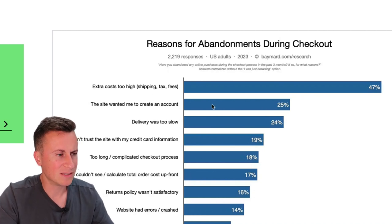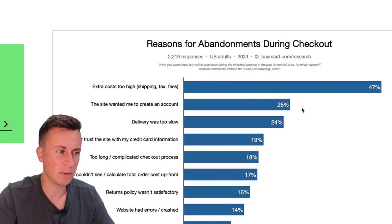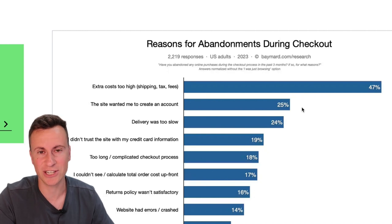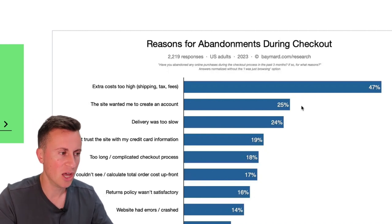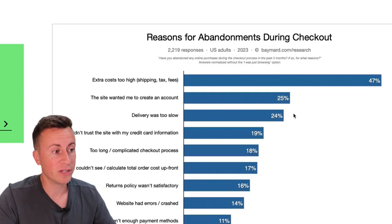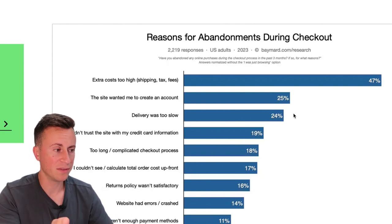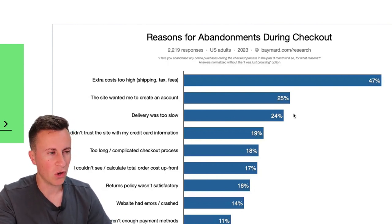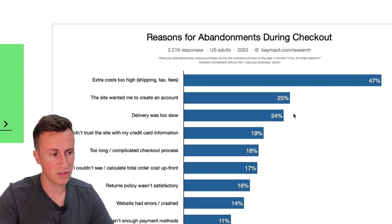Regarding being forced to create an account — this isn't an issue as long as you haven't been playing around and ticking checkboxes in your Shopify settings; by default it won't require that. Next: delivery was too slow. I want to bundle this in with delivery options not being present on site, or the customer not knowing when to expect the product.